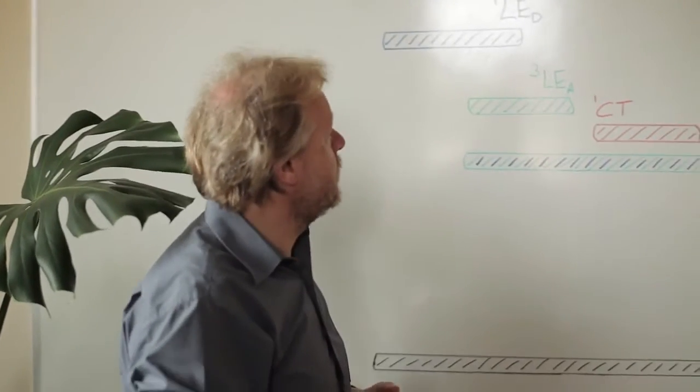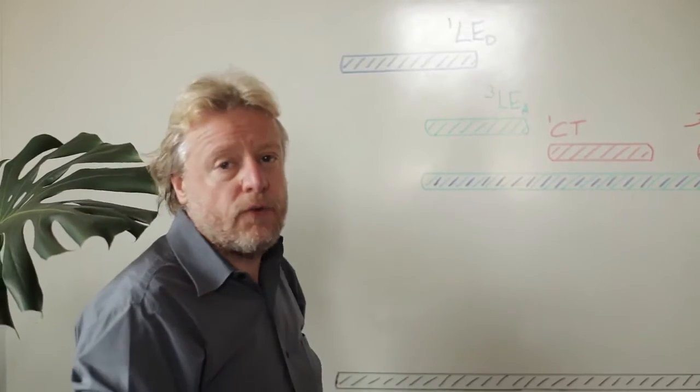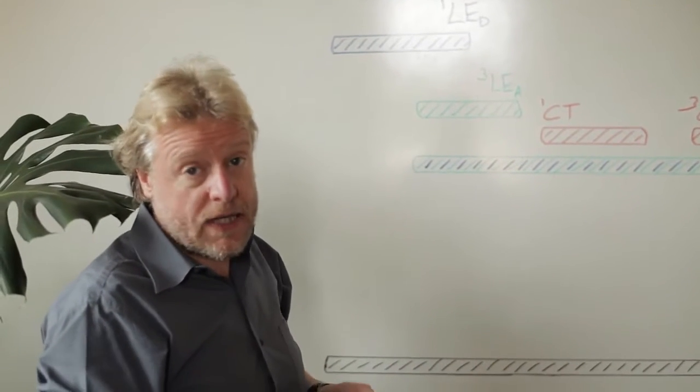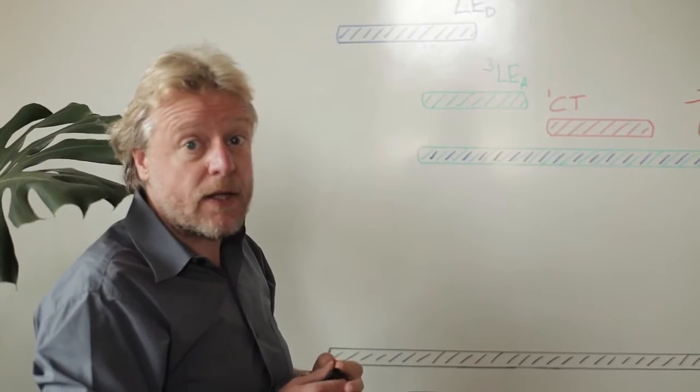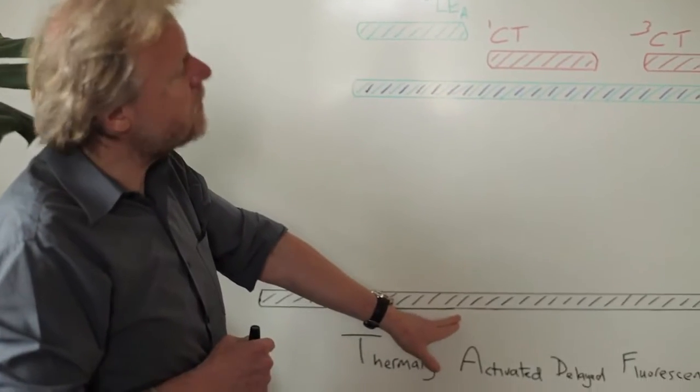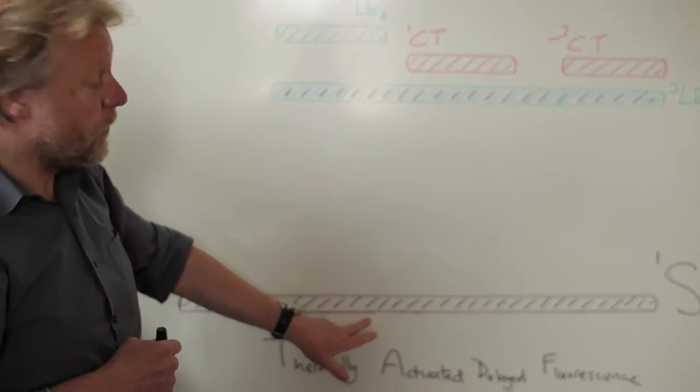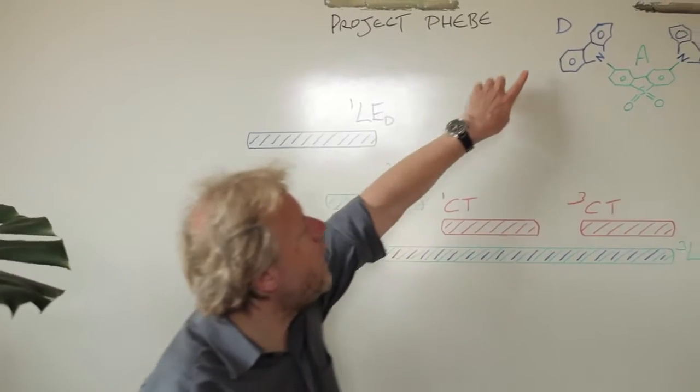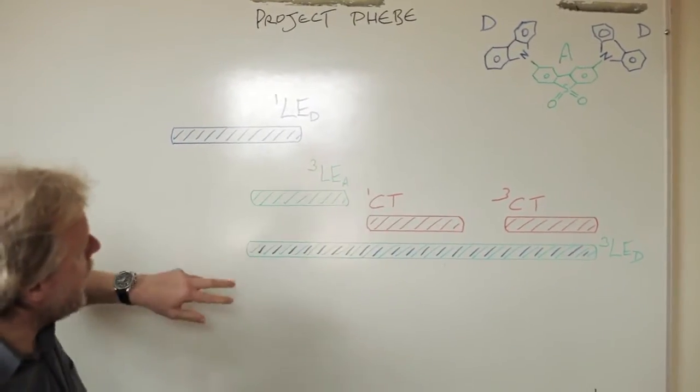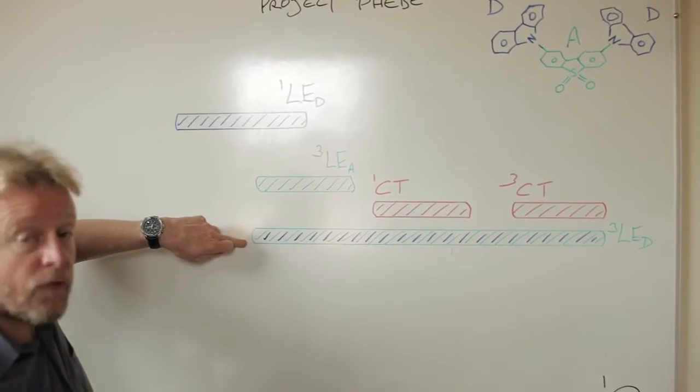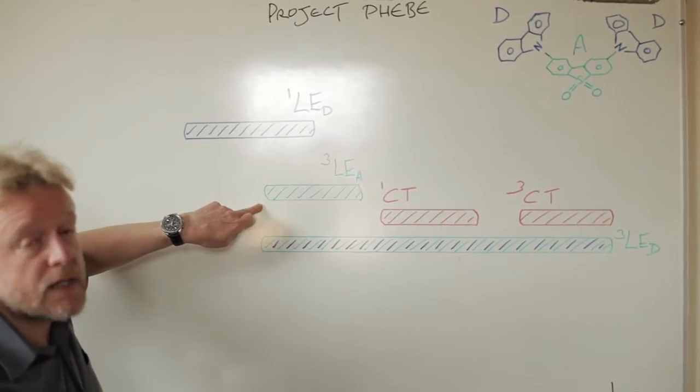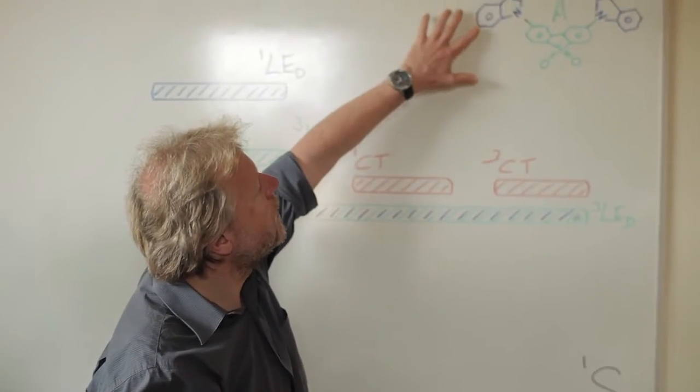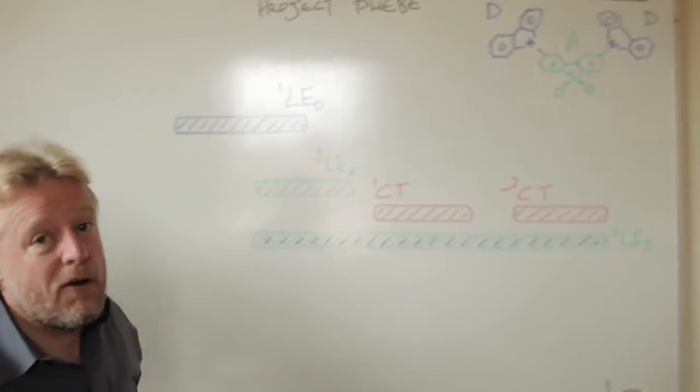And then what I've drawn out in sketch form are the important energy levels of that DAD molecule. We have the ground state of the molecule S0 which is a singlet state. We have the first excited state of the donor part of the molecule. We have the triplet states of both the donor part of the molecule and the acceptor part of the molecule, and these are separate. They don't interact with each other.